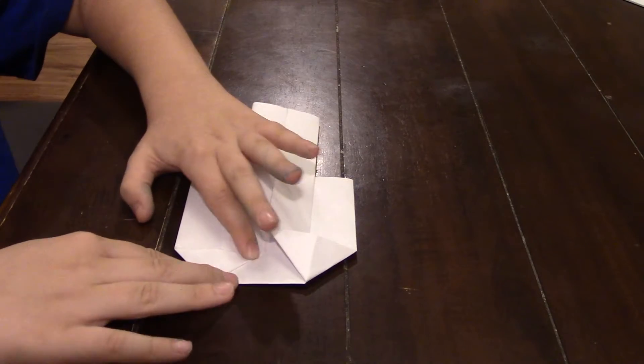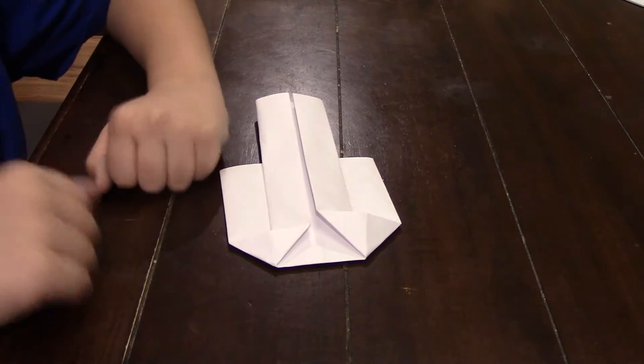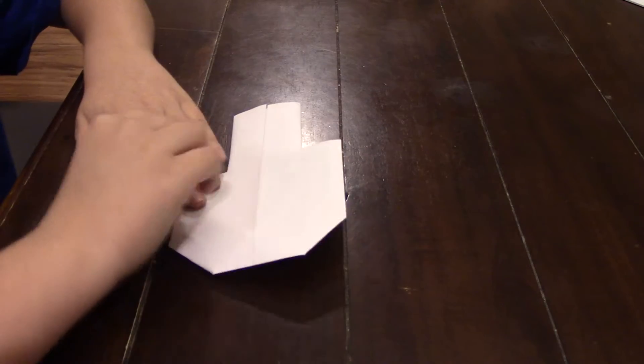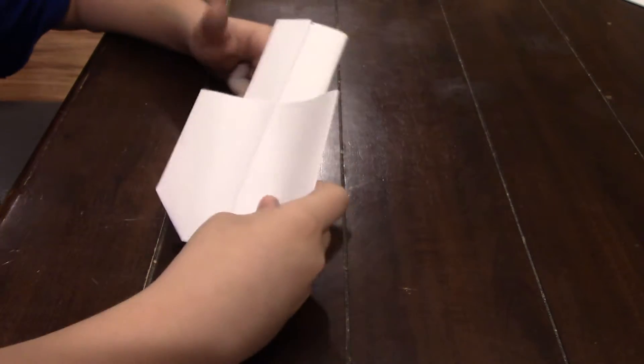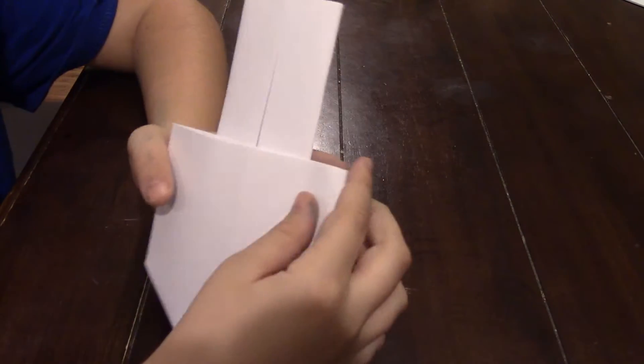Then fold it like that. And now just flip it over. And see now we've got the shortened head. And now we're going to round it out.